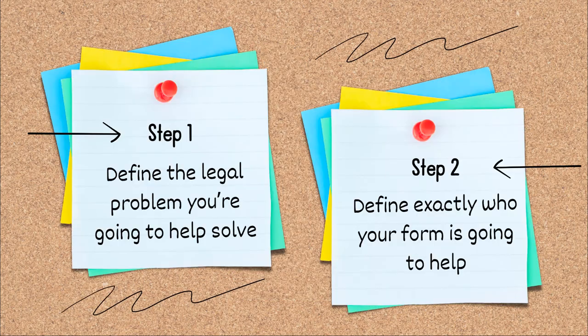The first step is to define the legal problem that you're going to help solve. This is your project goal. For example, you want to help people start a divorce in A to J land. So you have your legal problem and you have your jurisdiction. You've already narrowed your scope twice. Only starting a divorce and only in A to J land.